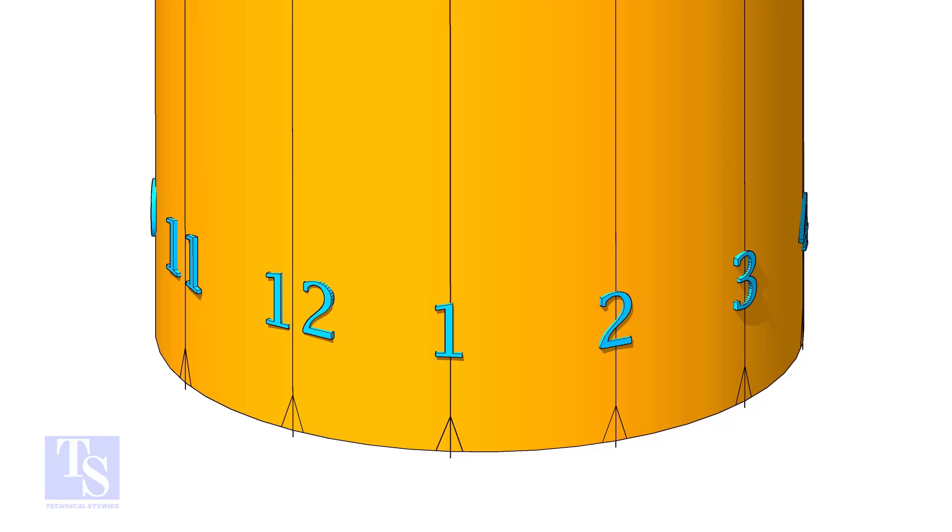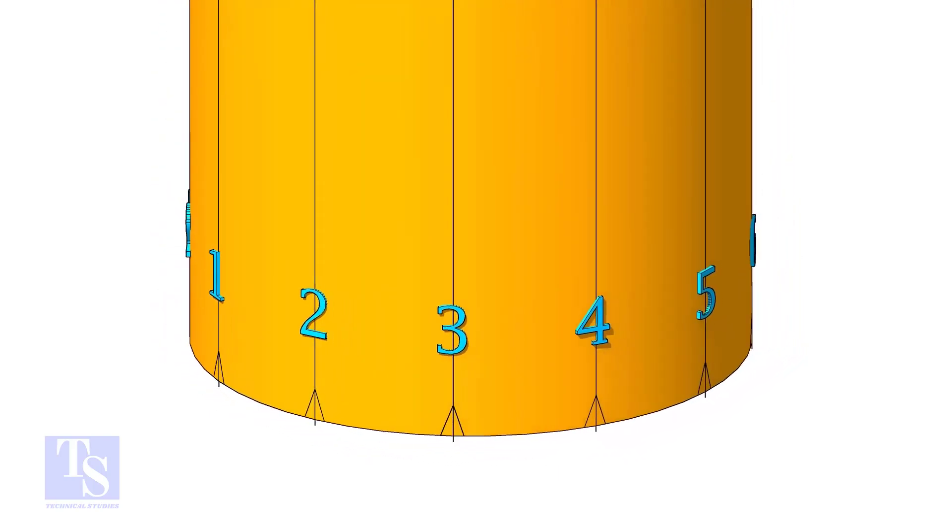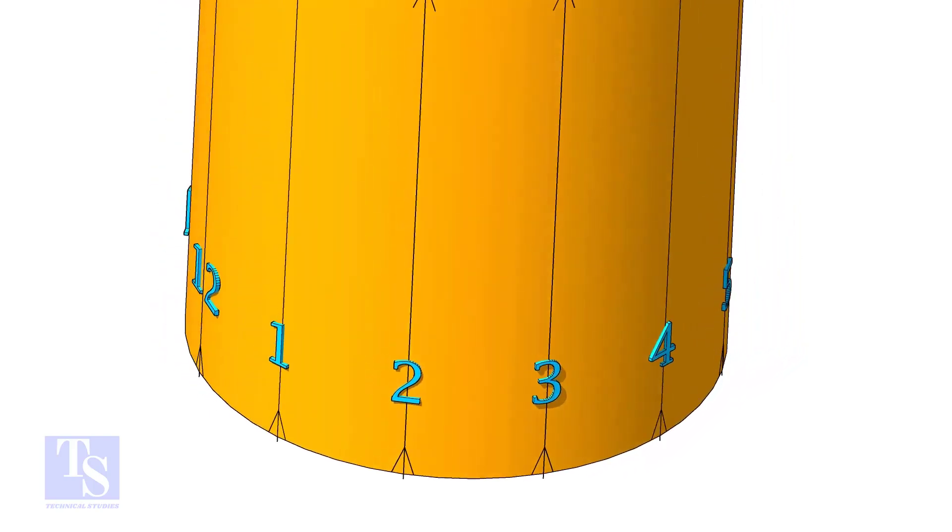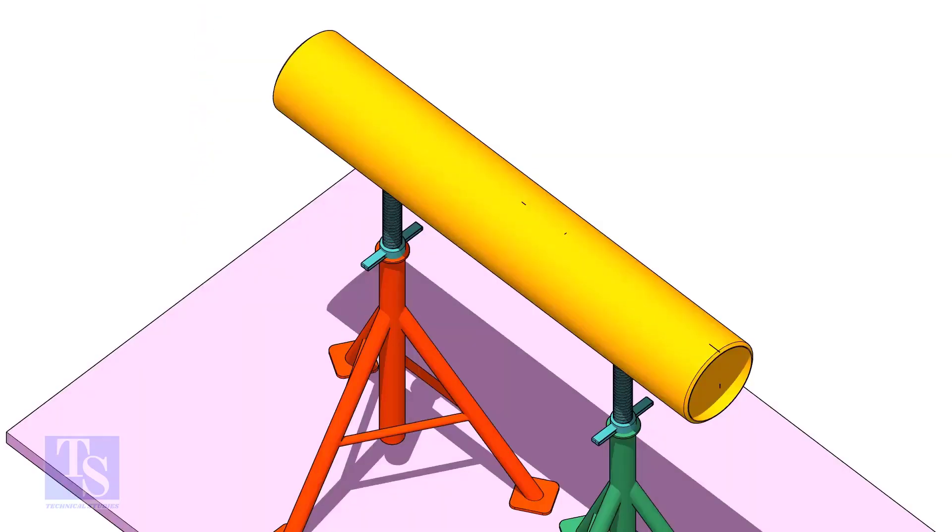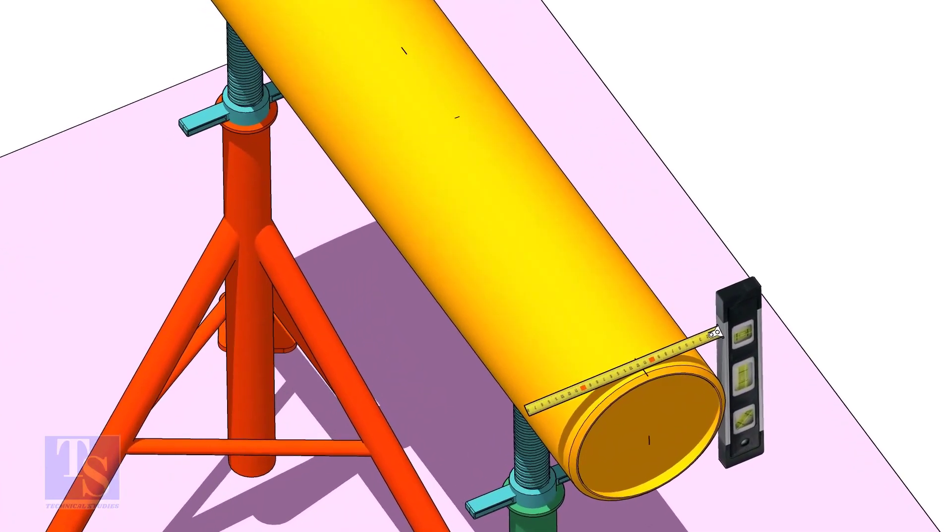Divide the branch pipe into equal parts. In this case, I divide the pipe into 12 parts. Mark the center line of the header on the top and the bottom.